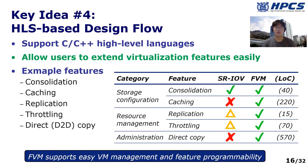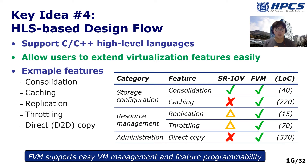FVM enables flexible and easily programmable implementations through its high-level synthesis design flow. In this work, we implemented five different storage functions: device sharing, throttling, replication, caching, and direct copy. To implement these example functions, we added and modified only tens to hundreds of lines of high-level synthesis code on the baseline FVM implementation.